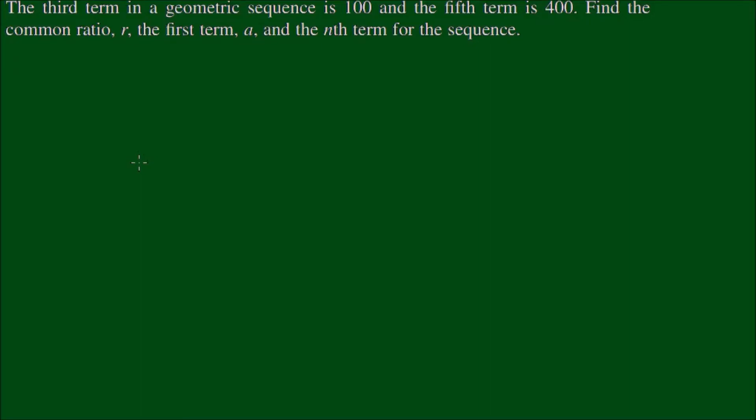Let's have a look at this geometric sequence example problem. The third term in a geometric sequence is 100 and the fifth term is 400. Find the common ratio r, the first term a, and the nth term for the sequence.